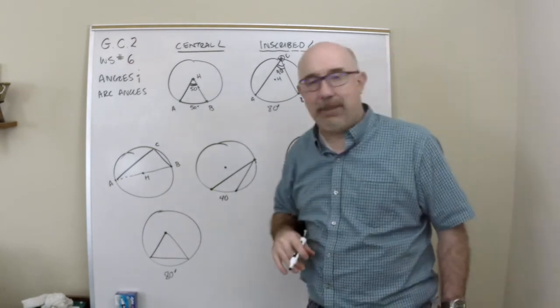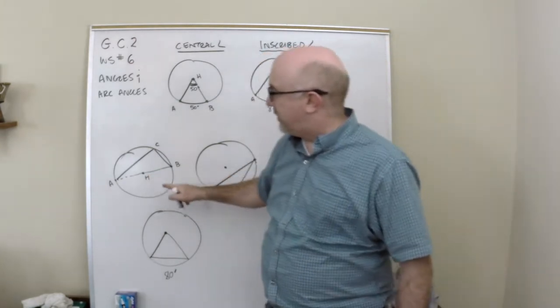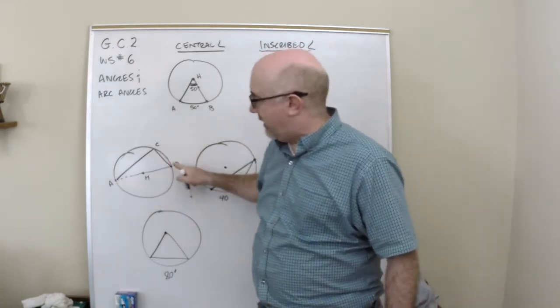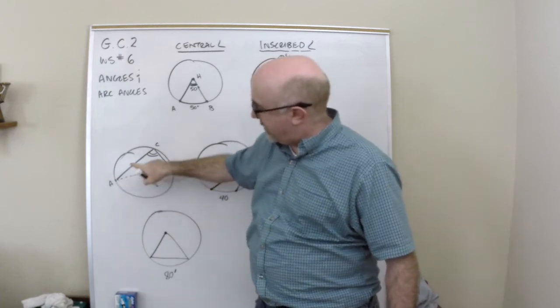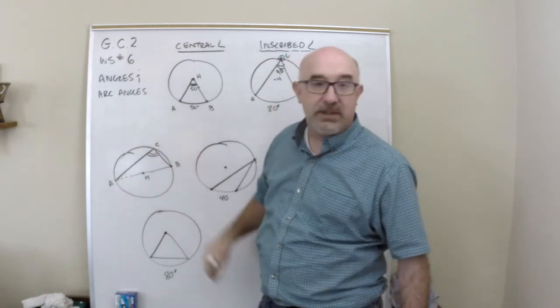I'll show you some cool little things that happen. One cool thing is that if you inscribe an angle—this is inscribed because it starts on the circle, goes to the circle, ends on the circle—it's inscribed.